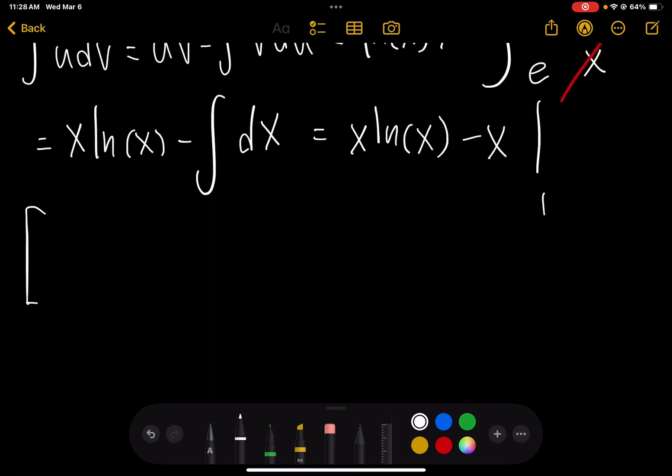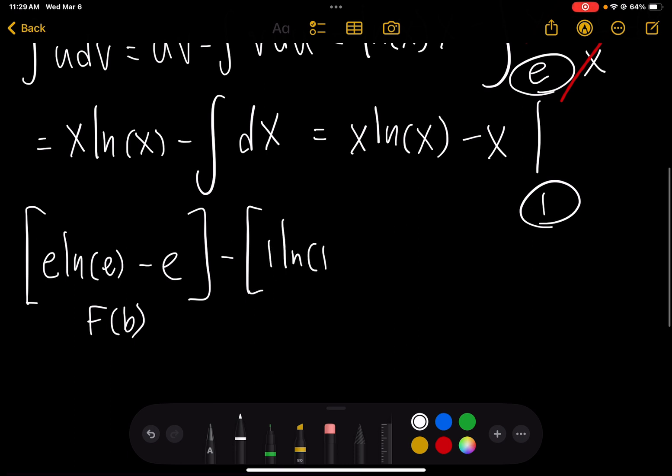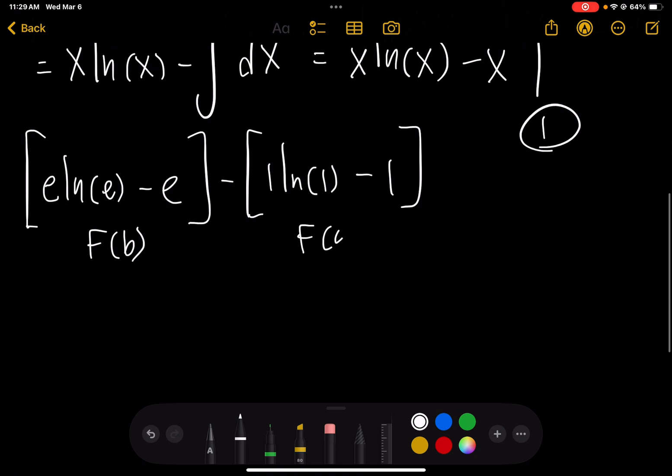So brackets, we have to evaluate at e first. So e ln e minus e. Label that f of b minus f of a, which is evaluated at 1. So 1 times the natural log of 1 minus 1. That's f of a.